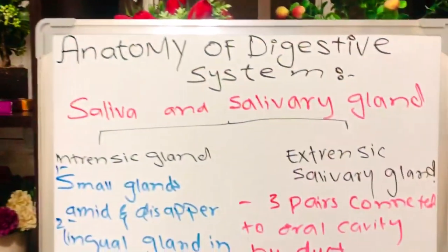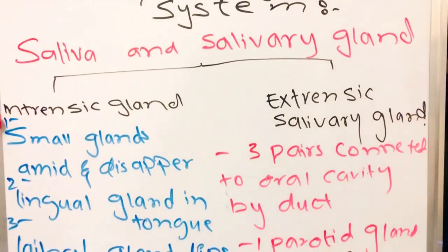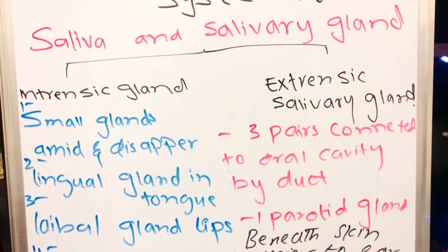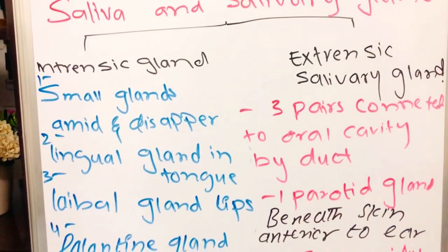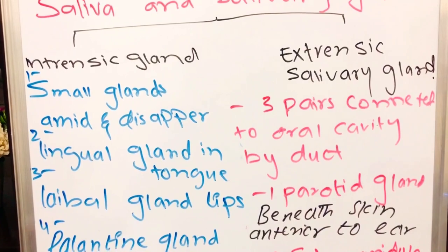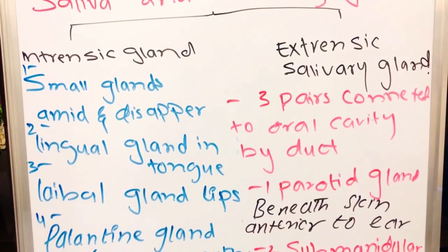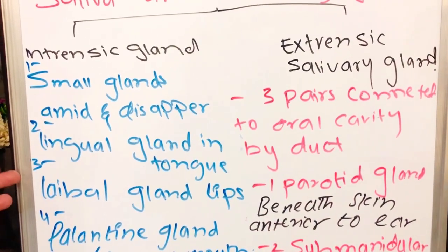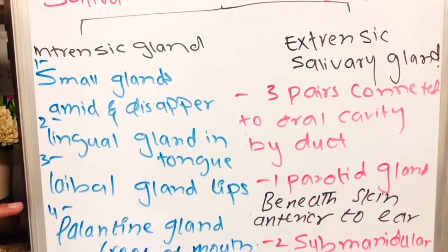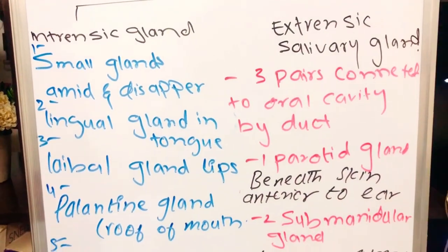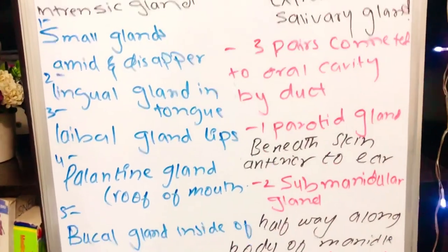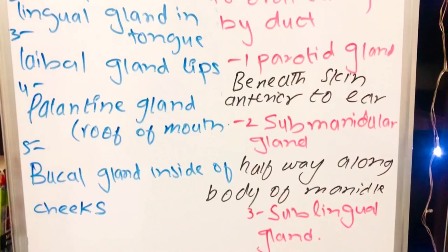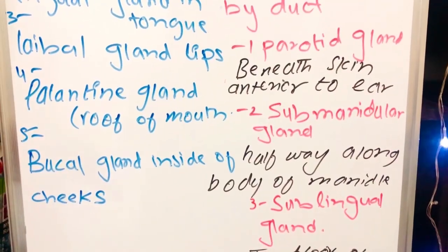Saliva and the salivary glands. We have two types of salivary glands: intrinsic and extrinsic. The intrinsic salivary gland is very small. For example, the lingual gland is present in the tongue, the labial glands are in the lips, the palatine gland is in the roof of the mouth, and the buccal gland is present inside the cheeks.